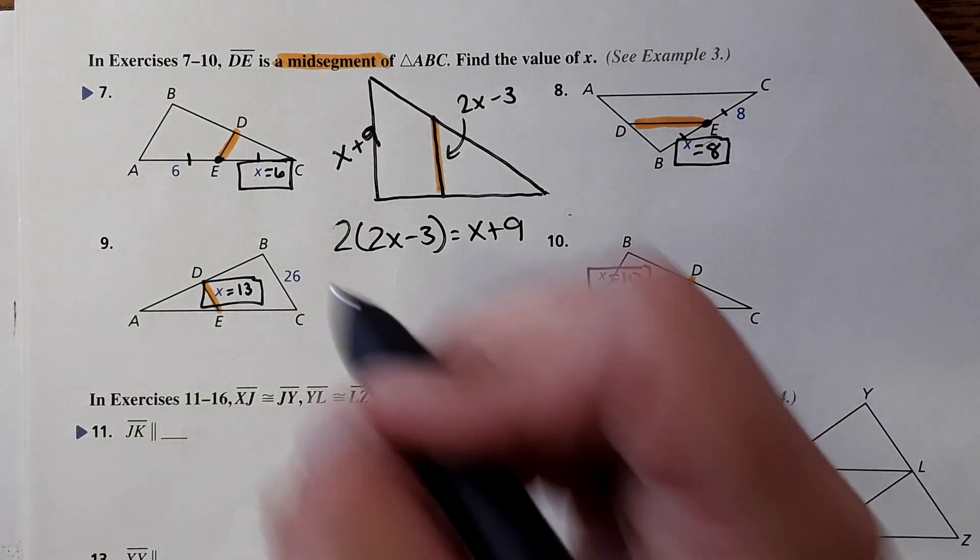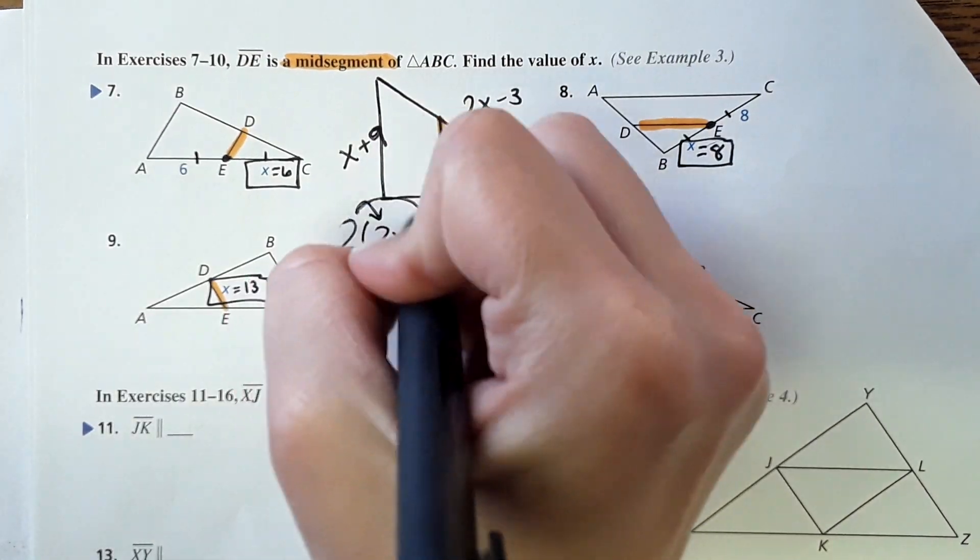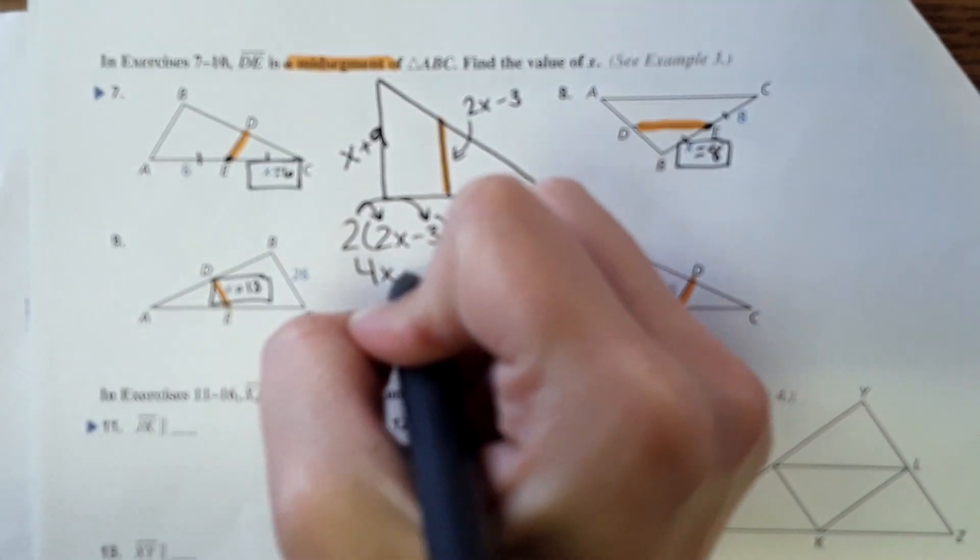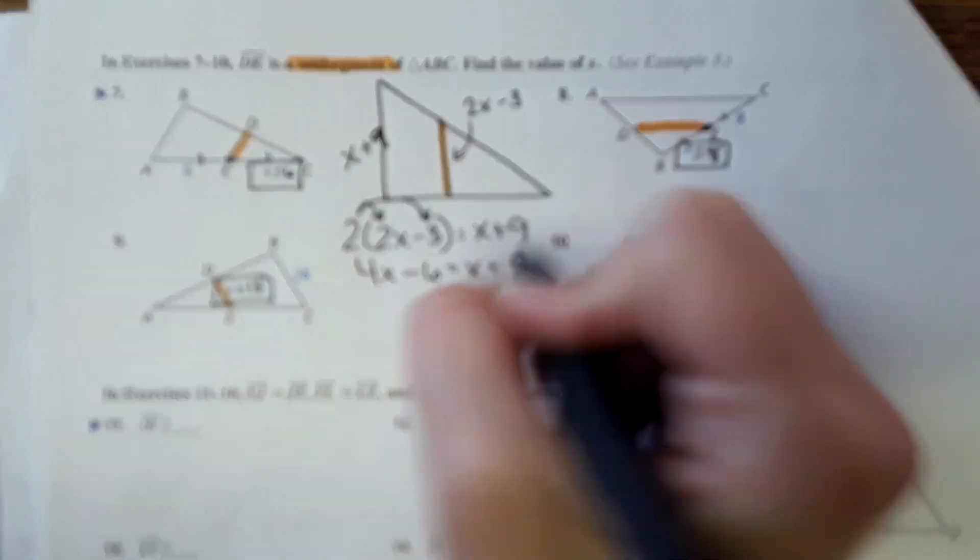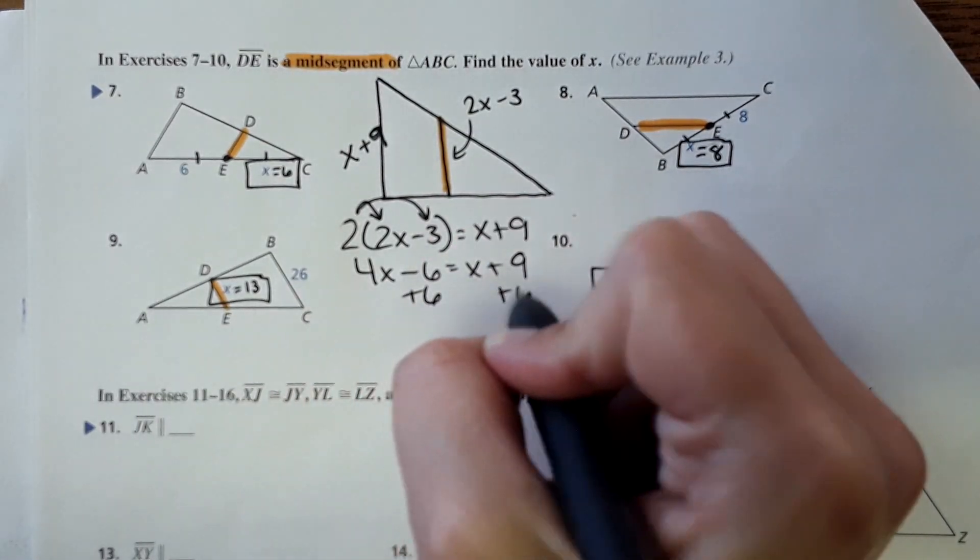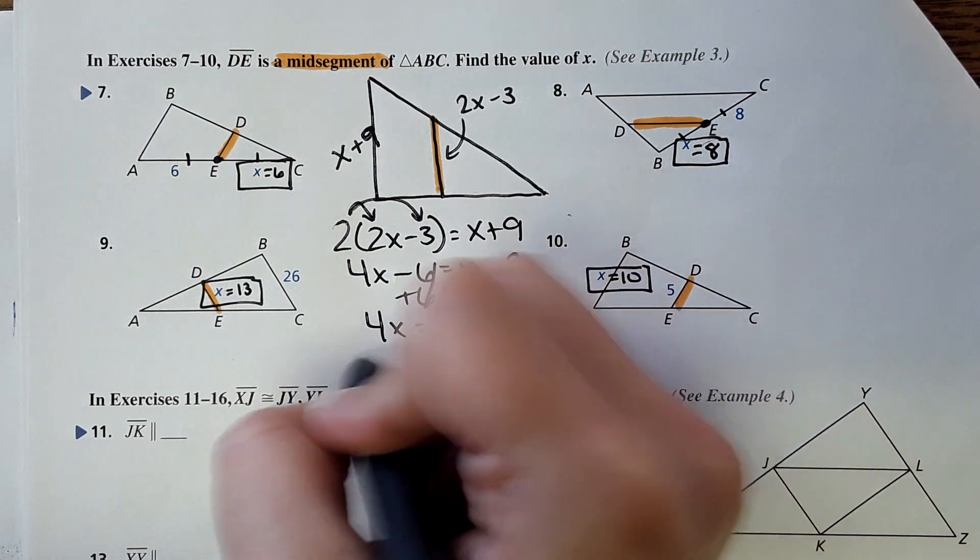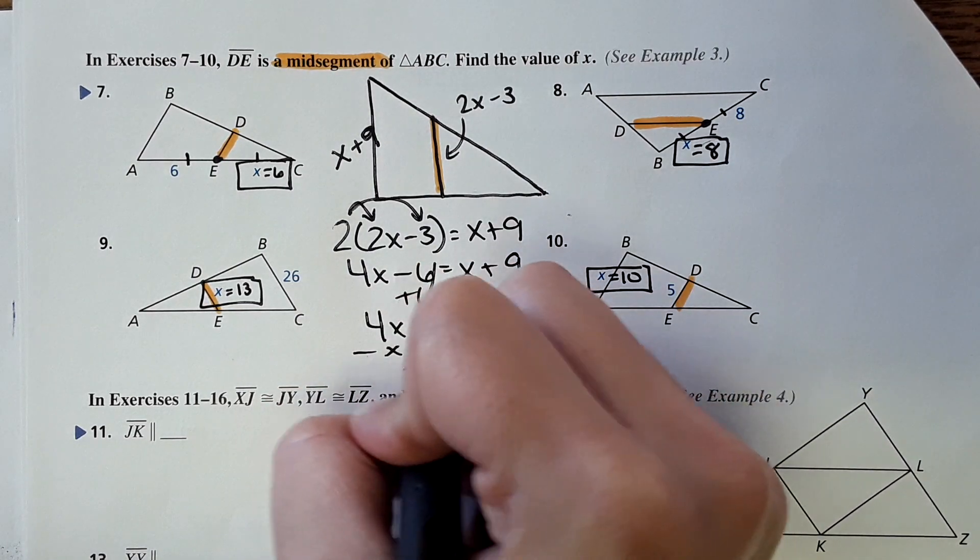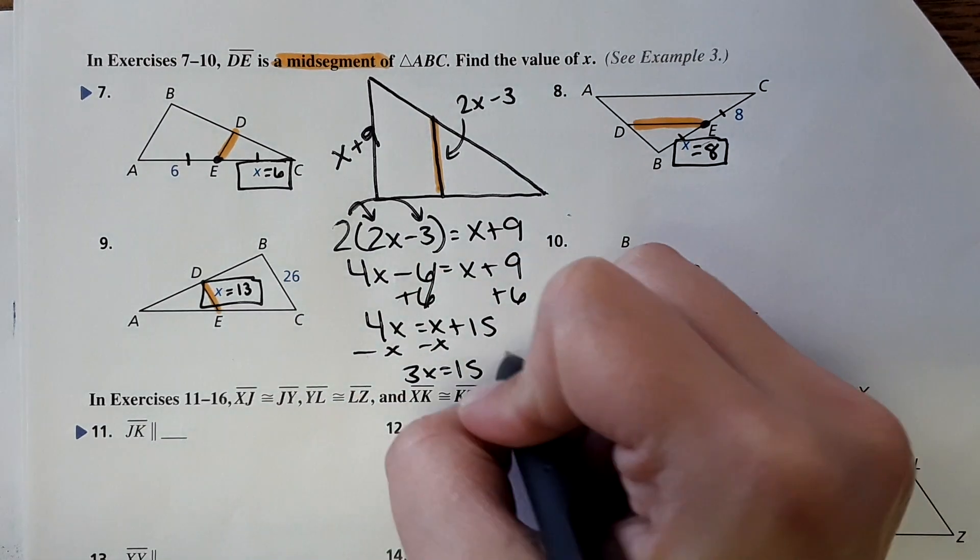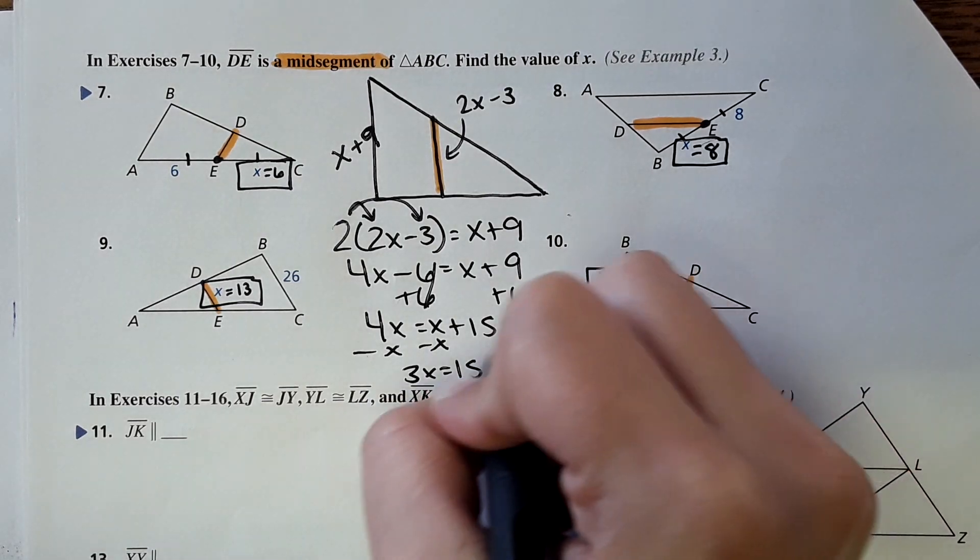And now we can solve for x. So then you just distribute, and we get x equals five.